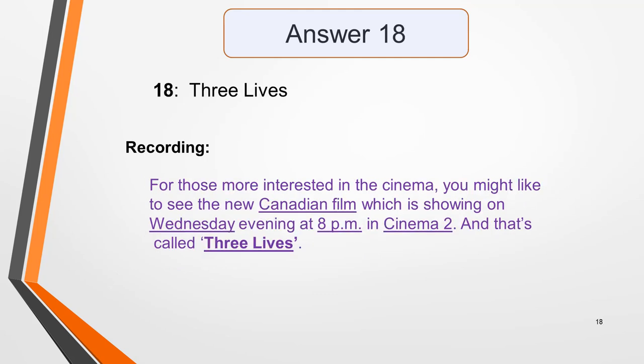Answer 18 is Three Lives. In the recording: 'For those more interested in the cinema, you might like to see the new Canadian film, which is showing on Wednesday evening at 8pm in cinema two, and that's called Three Lives.' Again, all the key words from the table are in the sentence preceding the answer, so you should have been able to identify it quite easily. Remember to use capital letters for this answer as well.